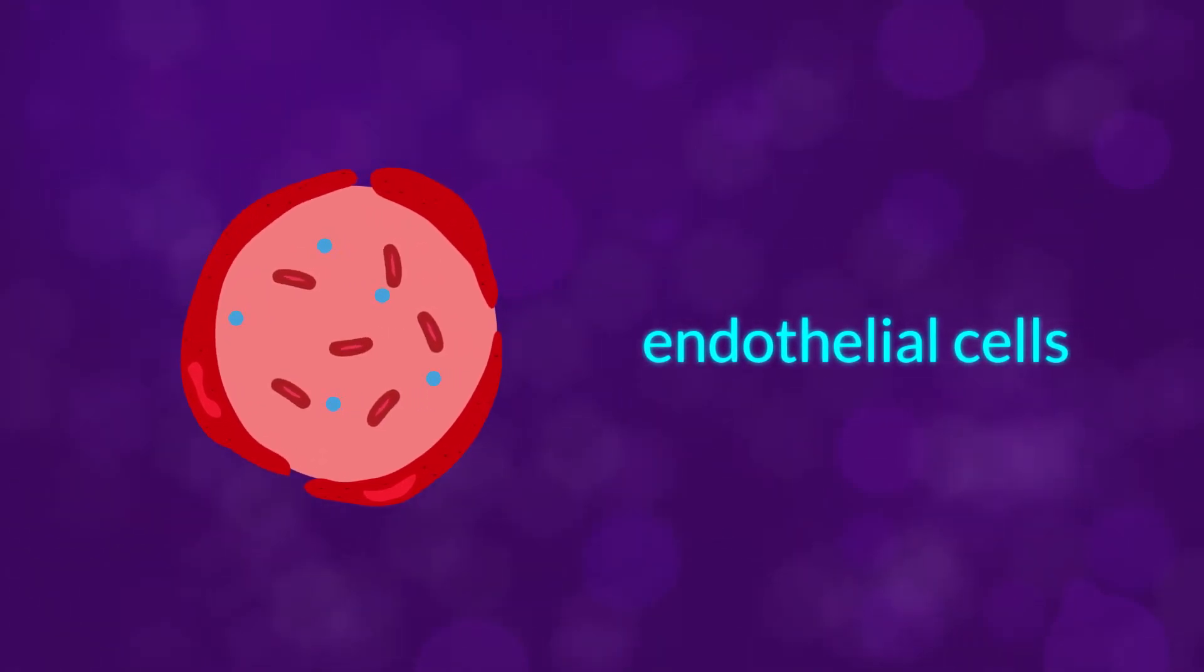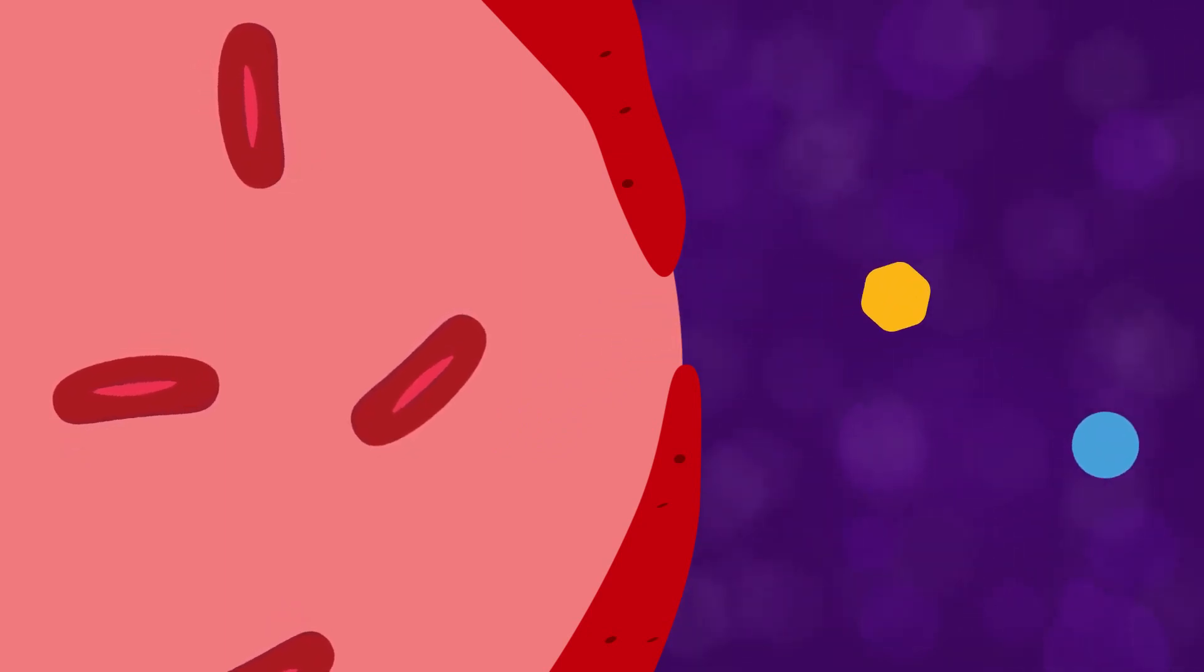Every blood vessel in the body is lined with a single layer of endothelial cells, which serve as an interface between the circulating blood and the vessel wall. However, where most blood vessels have gaps in between those endothelial cells, which allow molecules to pass through and reach different parts of the body...